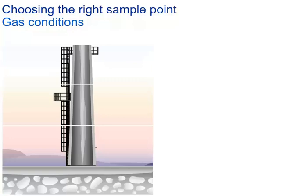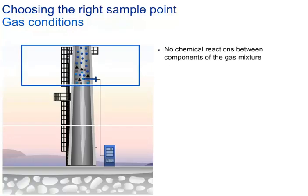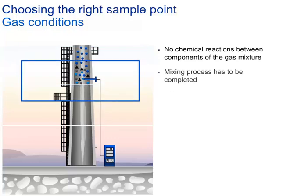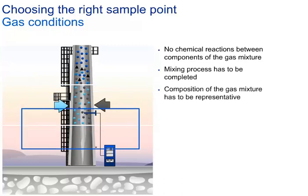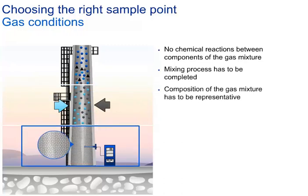Choosing the right sample point can also have a big influence on the measurement itself. It should be chosen according to the following criteria: chemical reactions inside the process should have ended so that there are no further reactions between components of the gas mixture; the mixing process must be completed at the sampling point so that the extracted gas contains the right mixture for a correct measurement; and in general, the composition of the gas mixture has to be representative for the information one expects from the sample point.